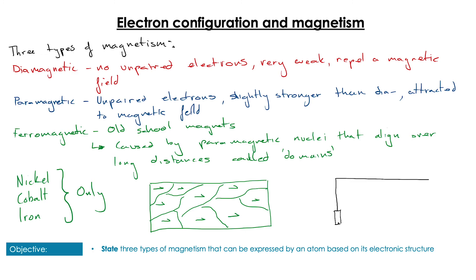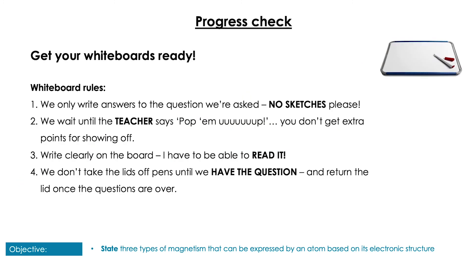To tell if we have a diamagnetic or paramagnetic substance, we use a Gouy balance, where an electromagnet is applied to a sample. If the sample is repelled out of the field it is diamagnetic, and if it is pulled in it is paramagnetic. You don't need to know about this balance in IB, but there is a way to determine if you have a diamagnetic or paramagnetic compound without a balance — all you need to do is identify if there are any unpaired electrons.